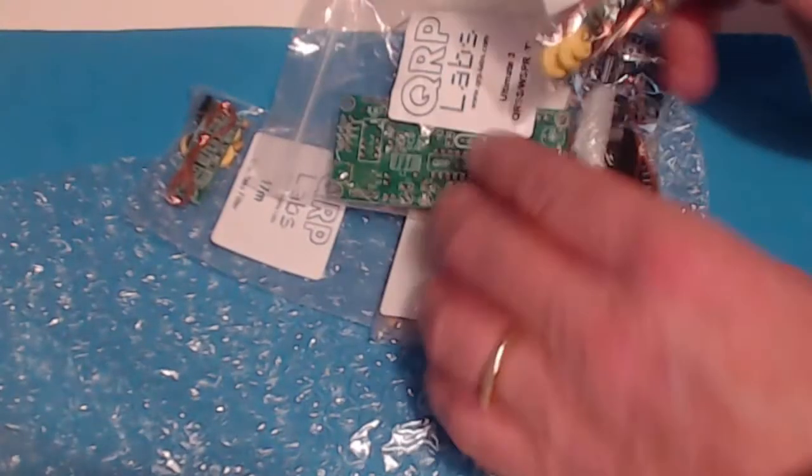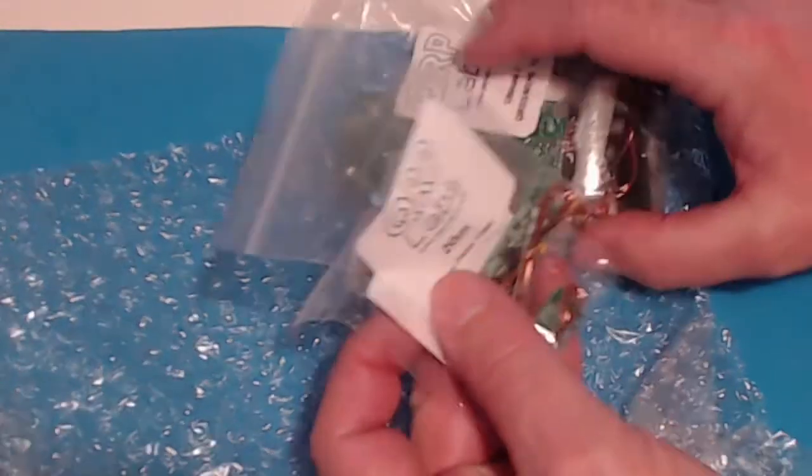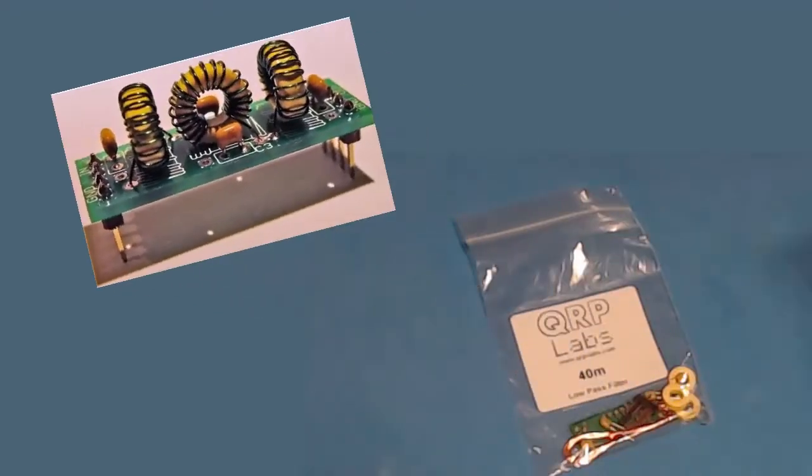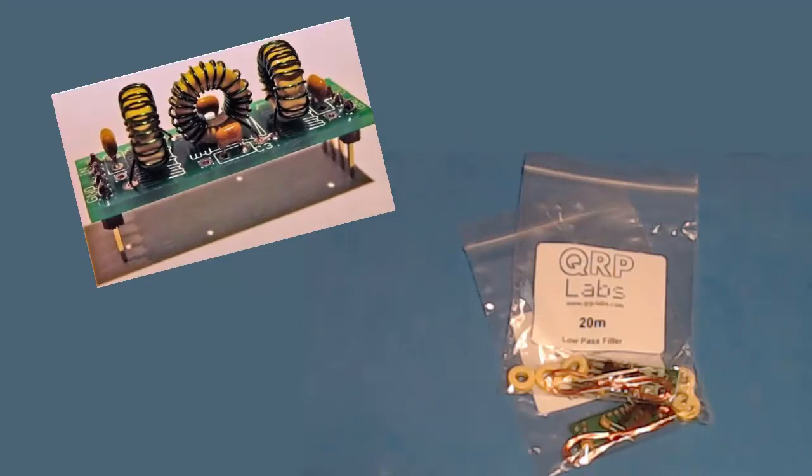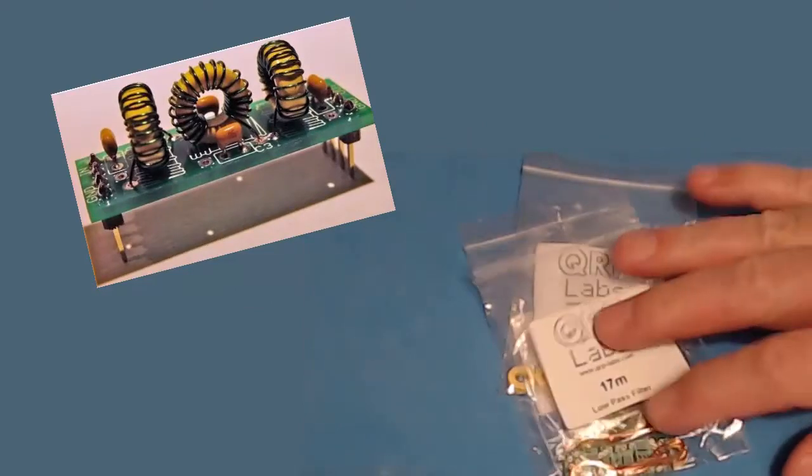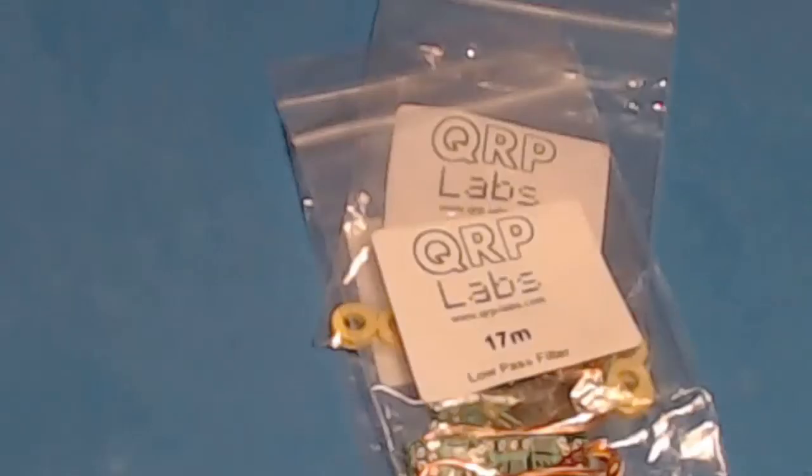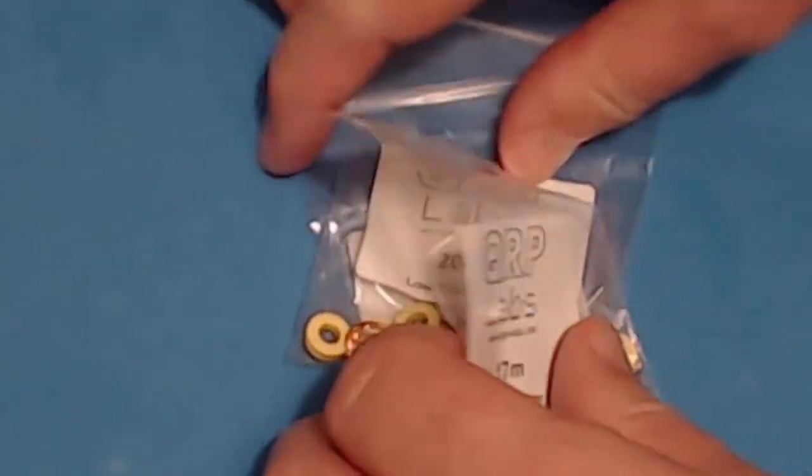I've got the main kit here, and then I ordered a few extra low-pass filters for each band. We got one for 40 meters, we got one for 20 meters, and I also got one for 17 meters. Let's take a look at what's inside these little guys here.